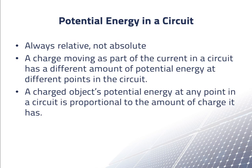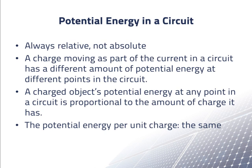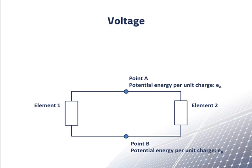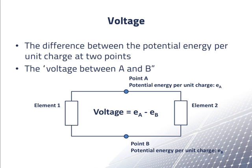A charged object's potential energy at any point in a circuit is proportional to the amount of charge it has, and the potential energy per unit charge is the same for any charge at a specific point in a circuit. We call this difference between the potential energy per positive Coulomb at two points the voltage between these two points.